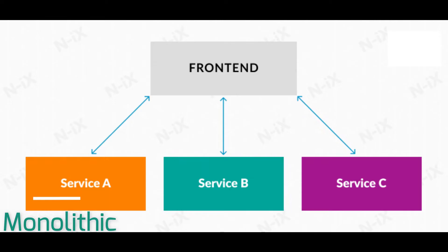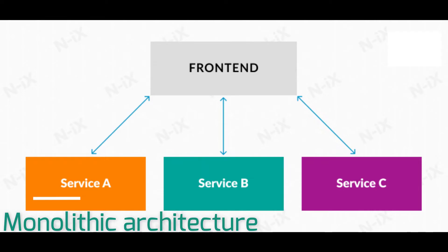Before I start, let's first discuss monolithic front-end architecture. In the monolithic architecture, the web browser communicates with the front-end monolith application, which communicates with the back-end API services that interact with the database. All the components are tightly coupled and interact directly with each other. In this diagram you can see a front-end monolith application interacting with three services: Service A, Service B, and Service C.